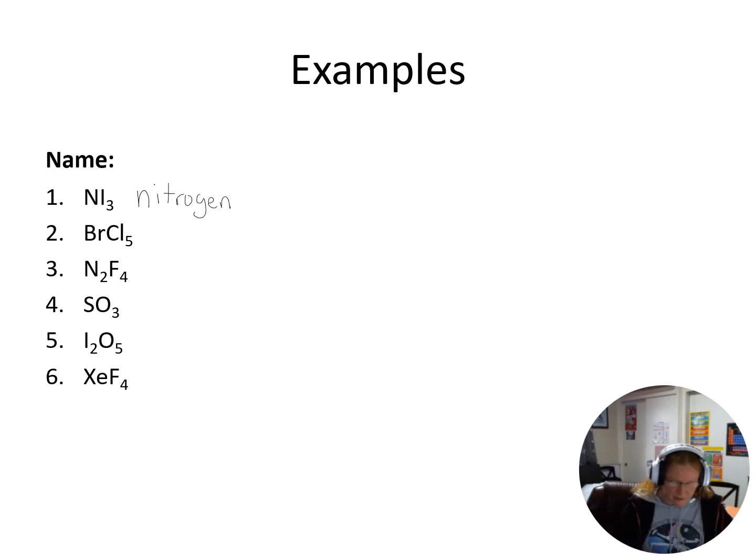Now I have three of the iodine, so our prefix for three is 'tri', and our second element we change the ending to that '-ide', so it becomes nitrogen triiodide.